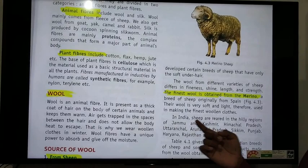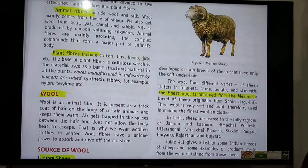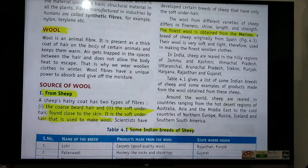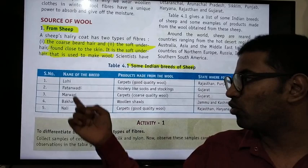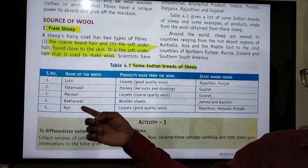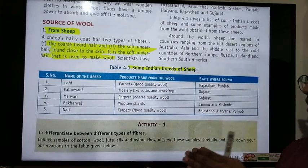In India, sheep are reared in several states: Jammu & Kashmir, Himachal Pradesh, Uttaranchal, Arunachal Pradesh, Sikkim, Punjab, Haryana, Rajasthan, and Gujarat. Around the world, sheep are reared in countries ranging from hot desert regions of Australia to India, Asia, and Middle East countries. Different breeds include Lohi sheep — used for carpets — Pathanwadi, Marwadi, Bakarwal, and Nali.